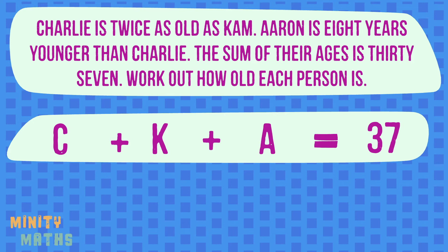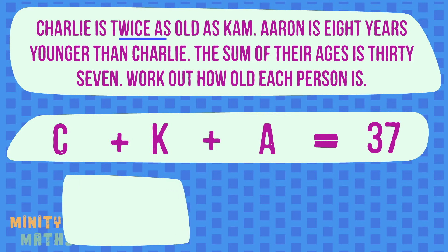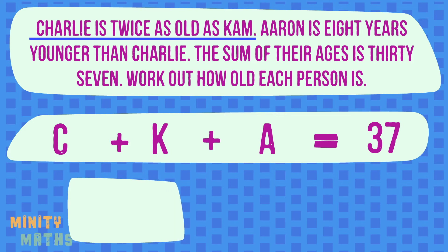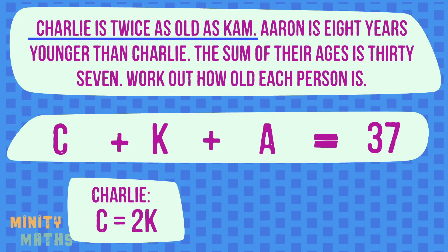For example, Charlie is twice as old as Cam — in other words, Charlie is two times as old as Cam. We can write this in algebra as Charlie c equals two times Cam k. You may actually find there is more than one way to express their ages in algebra. Just make sure you write these in terms of only one age, in this case the variable k.